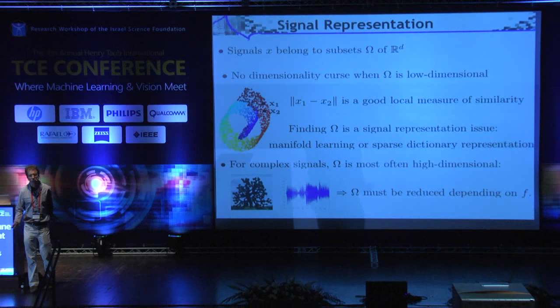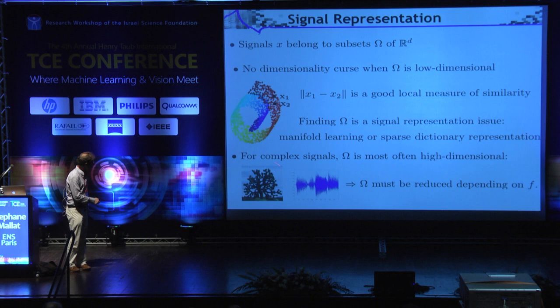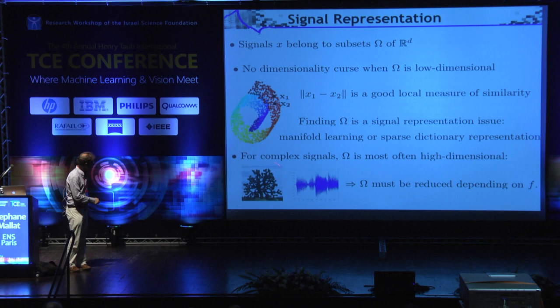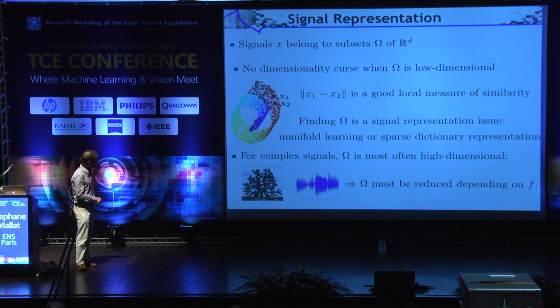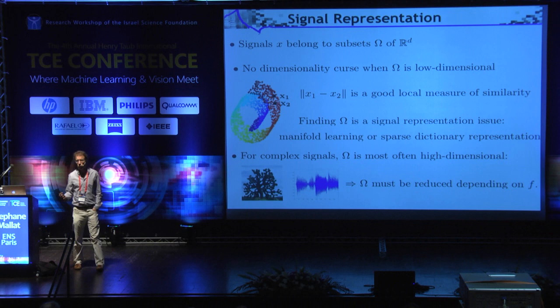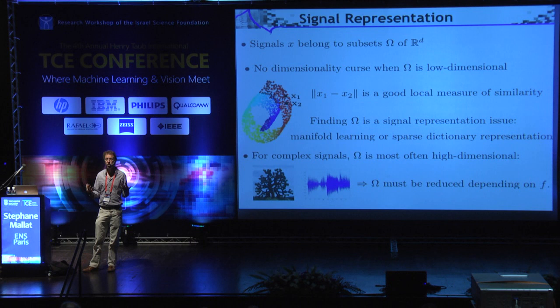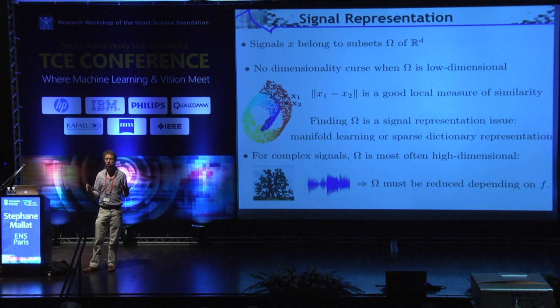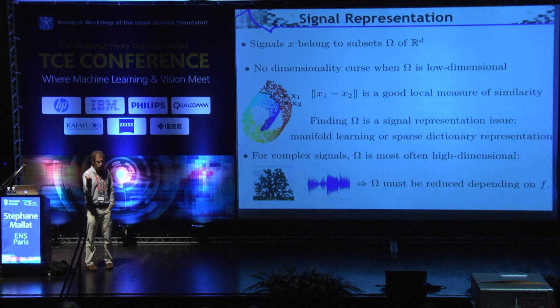Complex images and complex audio signals are not of that nature. They belong to a subset omega, but this subset omega is huge. Each pixel can vary more or less independently, giving a lot of dimensions. So you want to reduce your set omega without losing information crucial to recognize the image — you need to reduce it depending upon the properties of the function f you are looking for. These are called supervised problems.